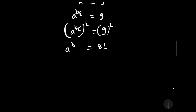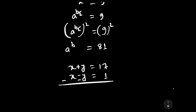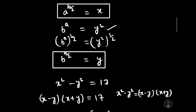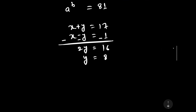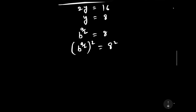Now let us solve for y. From x plus y equal to 17 and x minus y equal to 1, we get y equal to 8. The value of y was b to the power a by 2, so b to the power a by 2 is equal to 8. Squaring both sides, b to the power a is equal to 64.